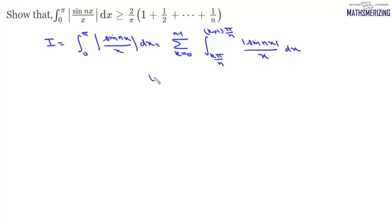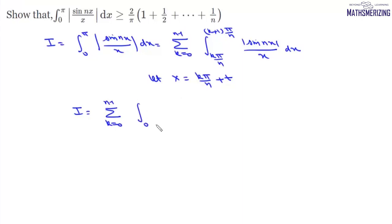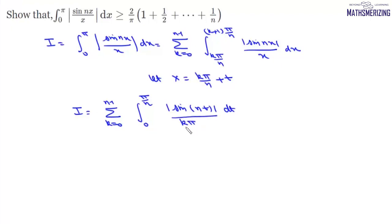We let x = kπ/n + t. So we can write this integral as the summation k varies from 0 to n−1, with lower limit 0 and upper limit π/n. Then |sin(nx)| becomes sin(kπ + nt) = sin(nt), and dt is divided by (kπ/n + t).